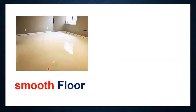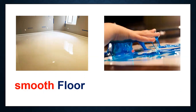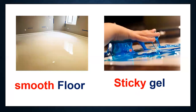Now let's see another example. How do we feel when we walk on this floor? It's smooth. So we use the word smooth — smooth floor. We are using smooth to describe this floor. What can we say about this? We can say sticky gel. Sticky is the word we use to describe this. So smooth and sticky are the words which describe this floor or this gel — they are also adjective words.